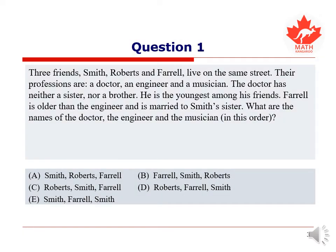Here is our first question. Three friends, Smith, Roberts and Farrell, live on the same street. Their professions are a doctor, an engineer, and a musician. The doctor has neither a sister nor brother, and he is the youngest amongst his friends. Farrell is older than the engineer and is married to Smith's sister.